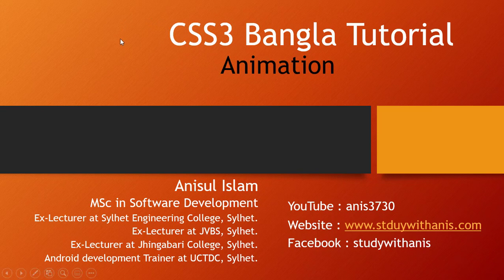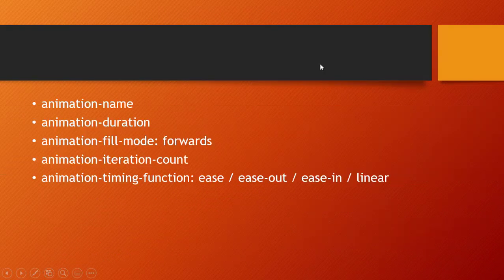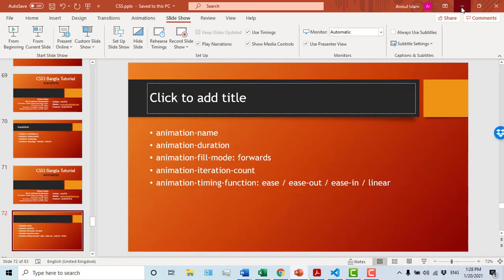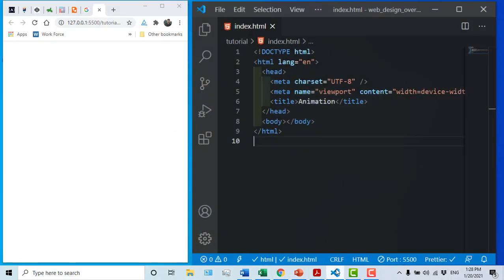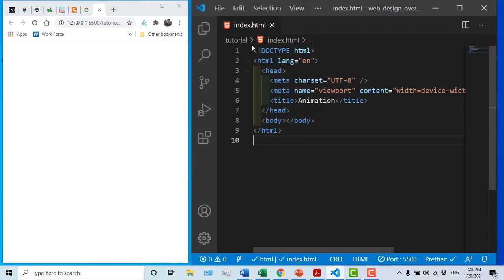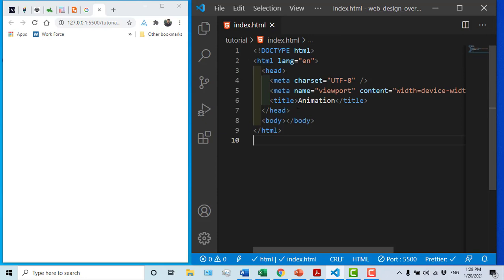In this video tutorial, we will show the animation. We will show the animation properties. We will have the first Visual Studio Code open. We will show the basic structure and output.